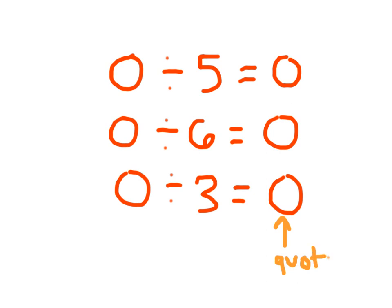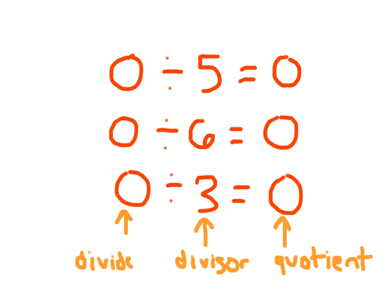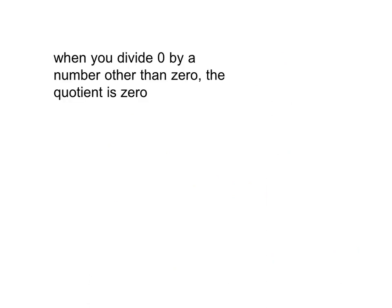This is the quotient of our division problem. Go ahead and copy one of these down, or write down one of your own, and label the parts. We have the parts of our division problem: a divisor, which is the number of parts that we are dividing the dividend into. 0 in this case is our dividend. 0 divided by 3 equals 0 — our dividend, divisor, and quotient. Take a moment to write it down. Pause if you need to.